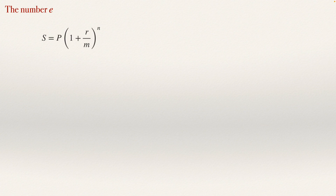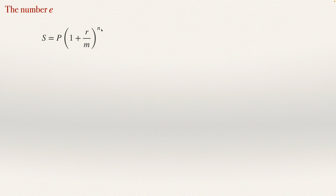To understand the number e, it will be useful to remember the formula of compound interest. The formula of compound interest says that the future value of a principal will be equal to that principal multiplied by 1 plus r over m to the power n, where r is the interest, m is the number of compound periods in a year, and n is the total number of compound periods in the whole term.